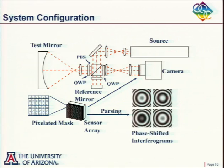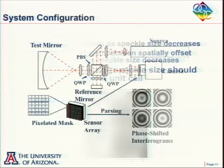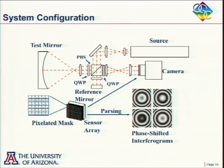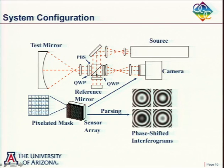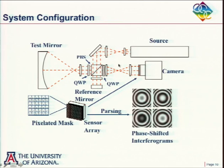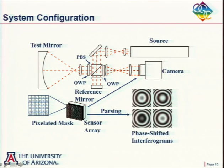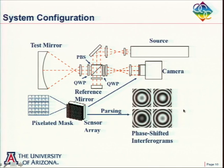We could use lots of different interferometers for this. The approach we looked at previously had orthogonal polarization in the two arms of the interferometer, arranged with a quarter-wave plate so test and reference beams have orthogonal polarization. We then put a pixelated wire-grid polarizer mask in front of our sensor. By looking at the A, B, C, D detector groups, we get our four phase-shifted frames.